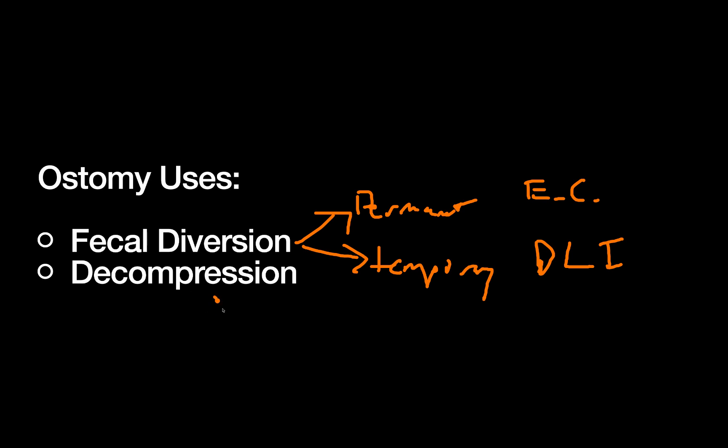For decompression, the type of ostomy we use really just depends on where the obstruction is. If it's in the colon and you have a competent ileocecal valve, then you're going to have to do some type of colostomy. Just to briefly imagine if you have colon here, ileum here, if there's no reflux through that ileocecal valve and it's competent, then the only way you can decompress a large bowel obstruction that's backing up is to do a loop colostomy, bringing up the colon. Because if you brought up small bowel here, it wouldn't actually decompress anything.